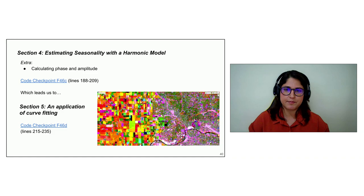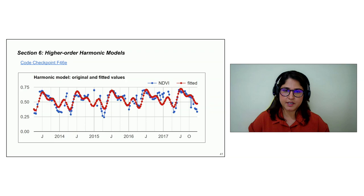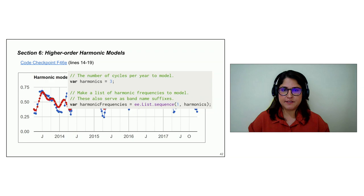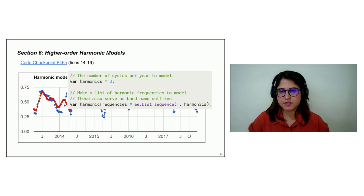Finally, section six shows how to produce higher-order harmonic models. In some situations there may be more than one cycle per year — for example in double-cropped agricultural fields. The script is structured so you can define one or more cycles per year using the variable 'harmonics'. A harmonic model plot with three cycles per year is shown for the California point. If you open the code checkpoint, you can test different harmonic cycle configurations.